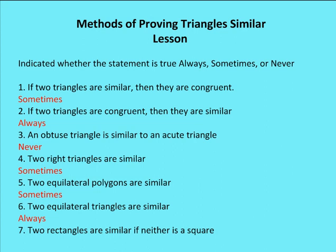Finally, two rectangles are similar if neither is a square — and that answer is sometimes. Sometimes I can have a rectangle that looks long and wide, and another that looks tall and narrow. Even though one is smaller than the other, they don't have the same shape; the relationship of the side lengths is going to be different between the two rectangles, and therefore they will not be similar. Come join us in a couple minutes to look at some practice problems involving the AA similarity theorem, the SAS similarity theorem, and the SSS similarity theorem.